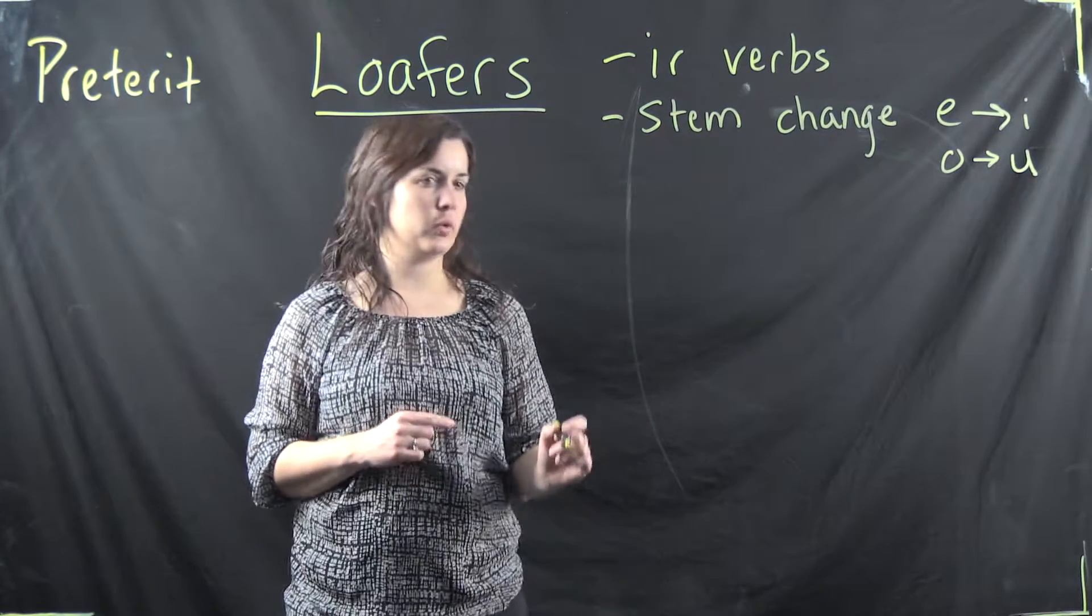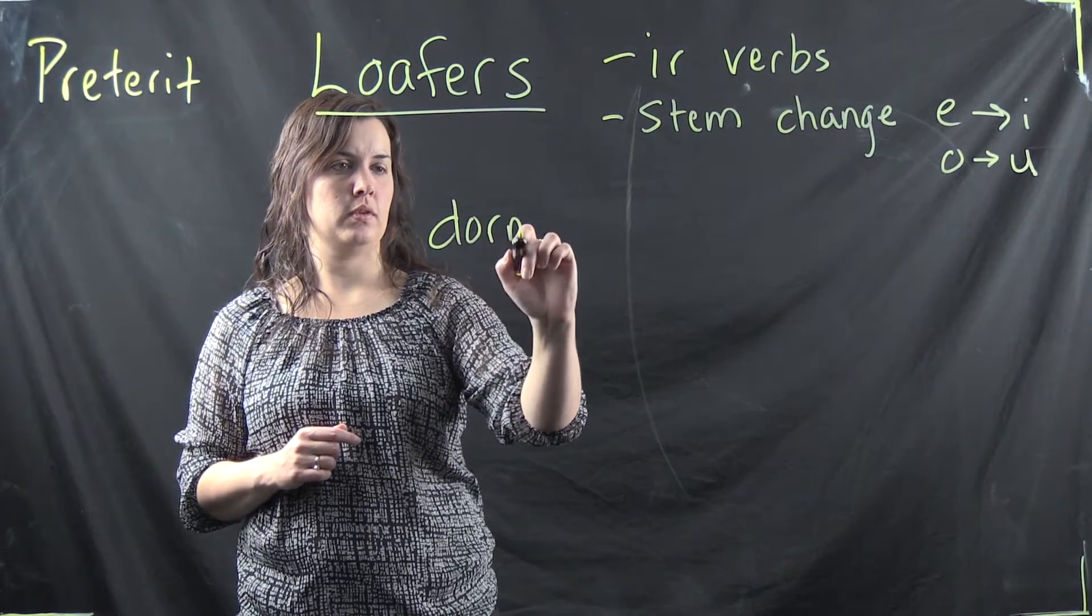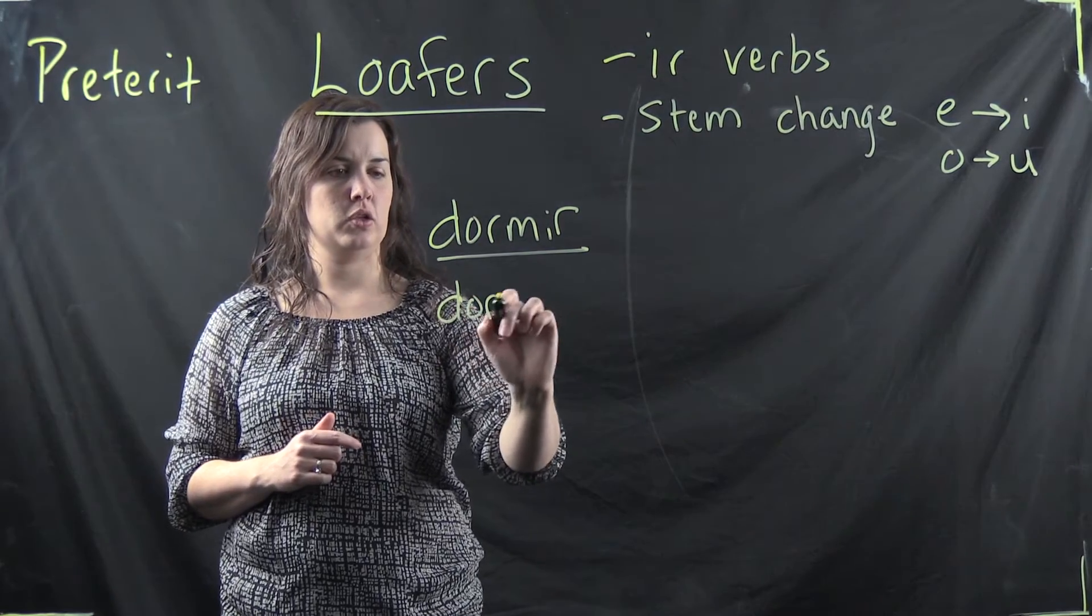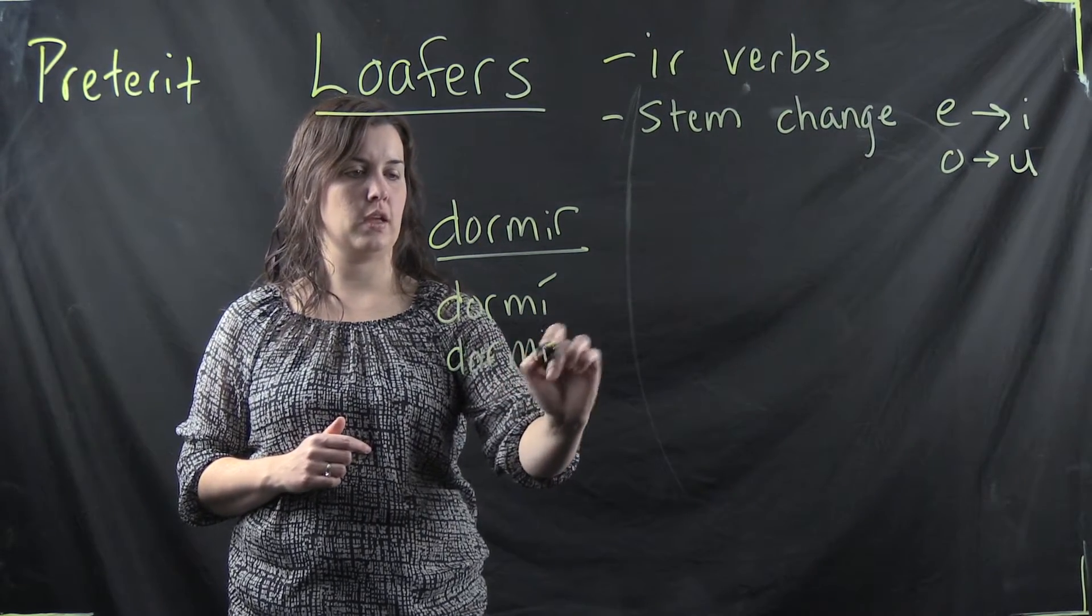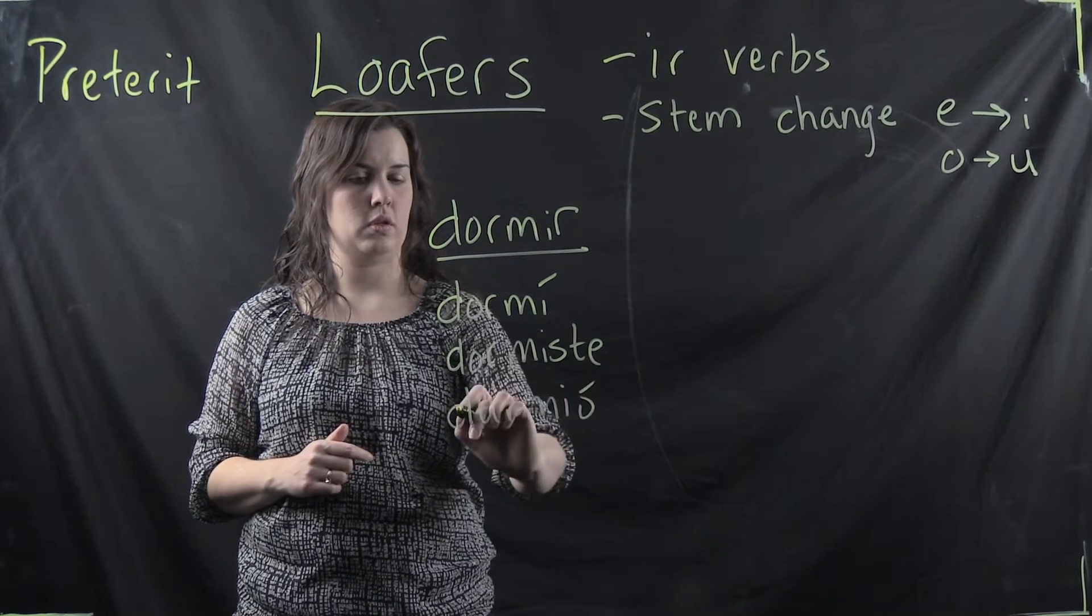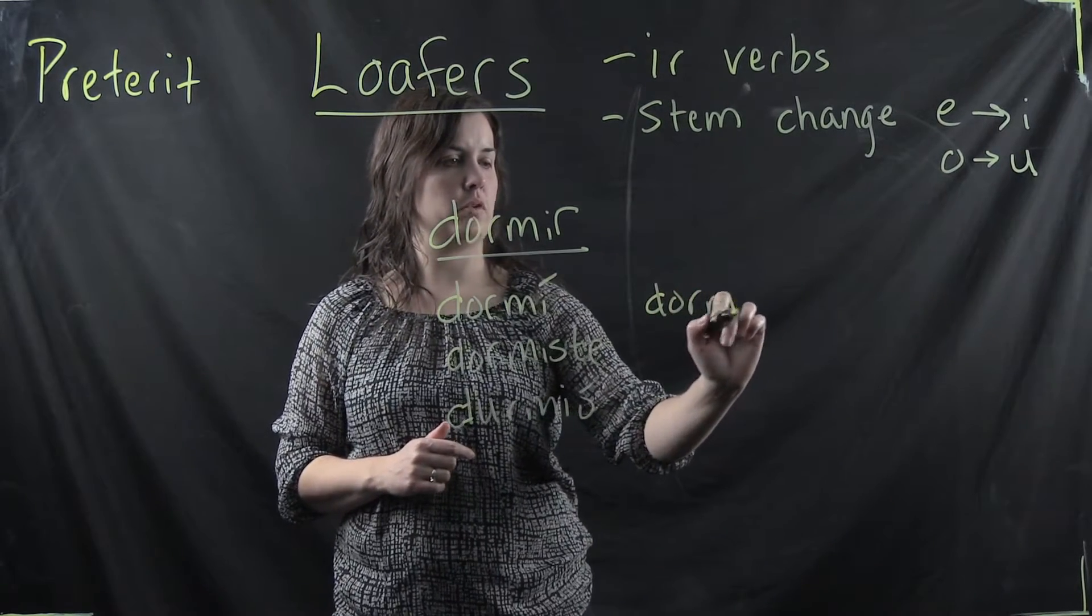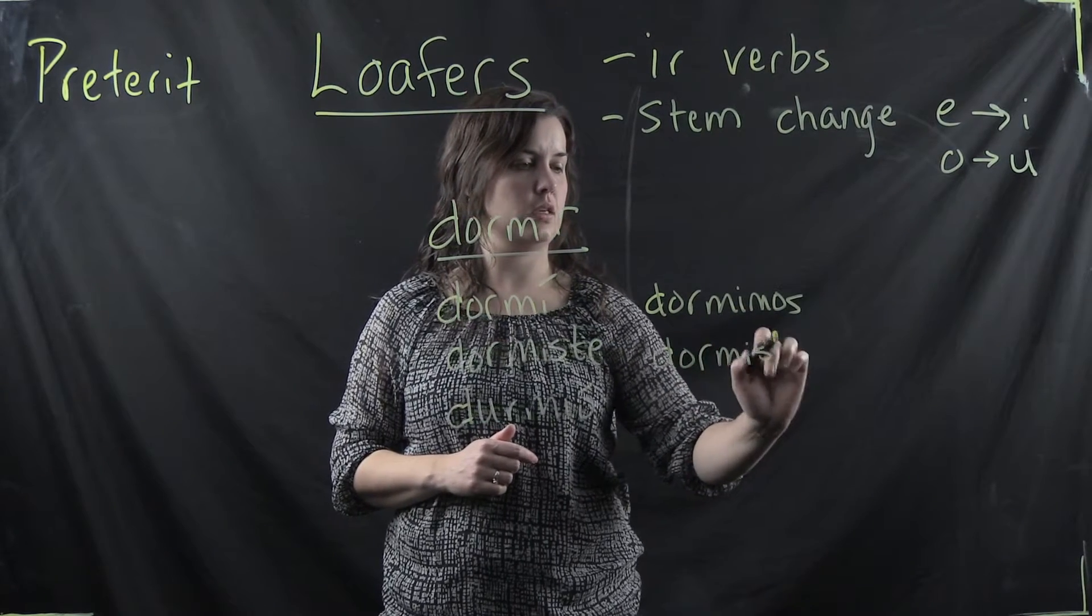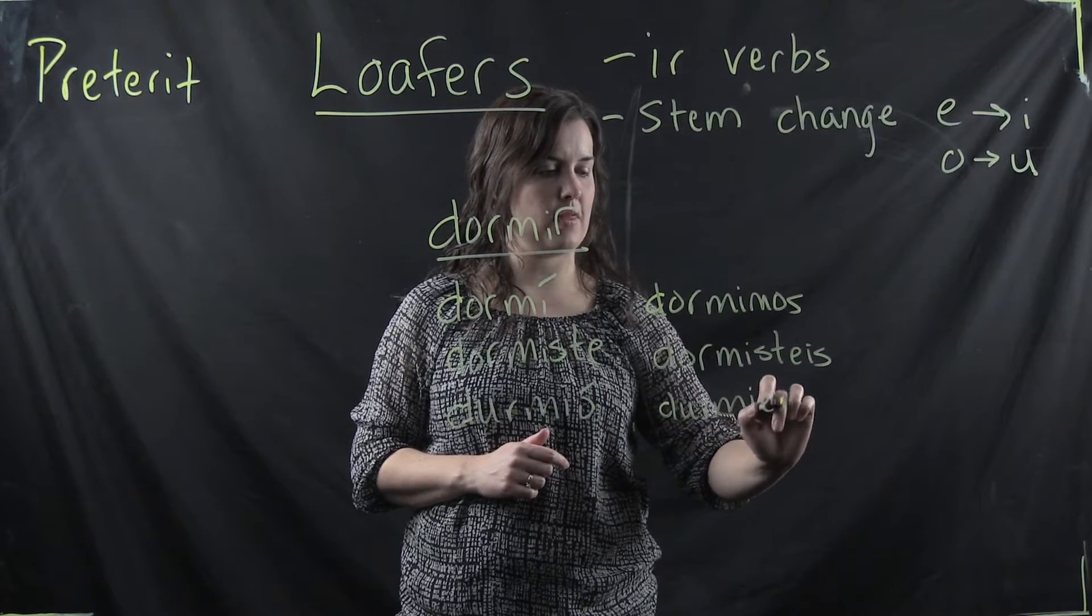Now let me show you what I mean. You have a verb like dormir in the preterite looks like dormí, dormiste, durmió, dormimos, durmistes, durmieron. Now what happened there?